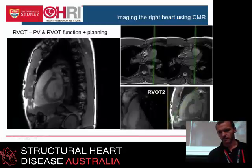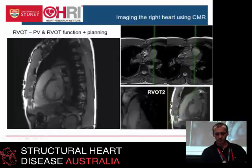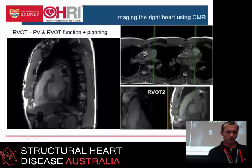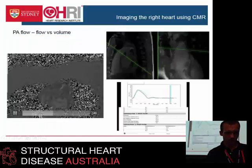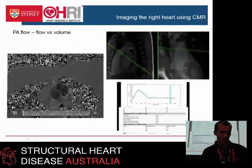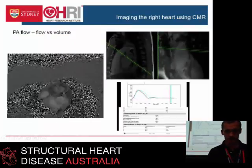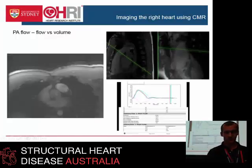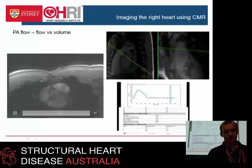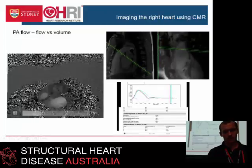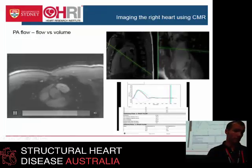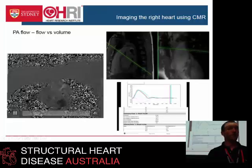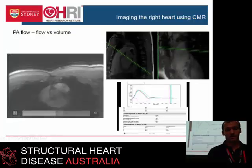Here's an RVOT view - I've just gone bang up, perpendicular to that. We take the RVOT and the RVOT2 and make sure our slice for measuring the pulmonary artery flow is perfectly perpendicular to the flow, which is really critical for flow quantitation.